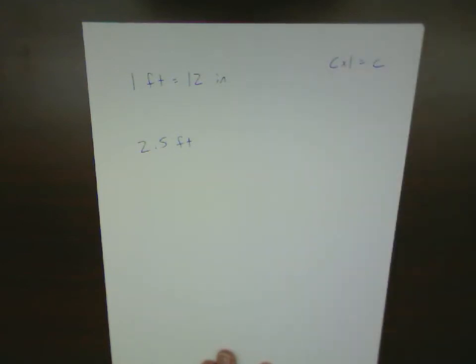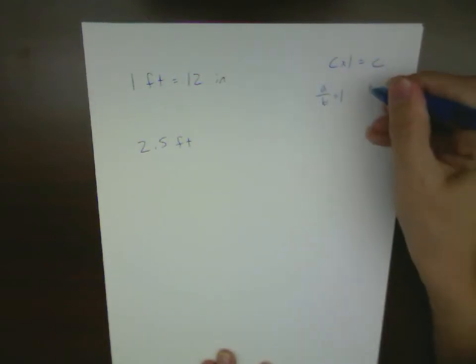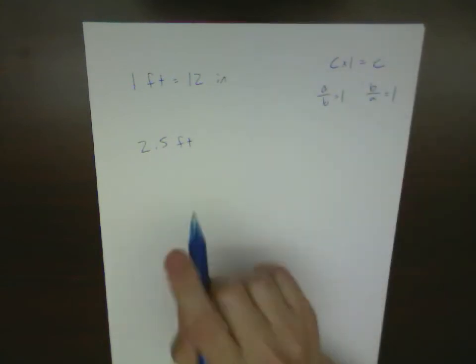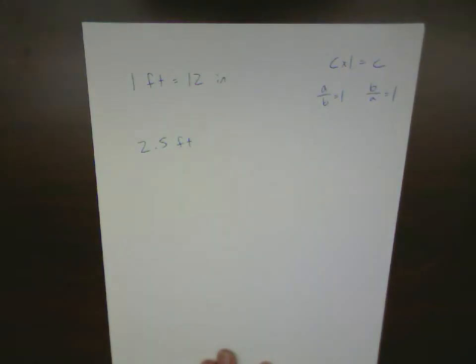Now, when we said we could do either A over B equals 1, or B over A equals 1, we have to decide on each problem, how do I take this conversion factor and put it into the form that I need? What you want to keep in mind here is numerators and denominators.